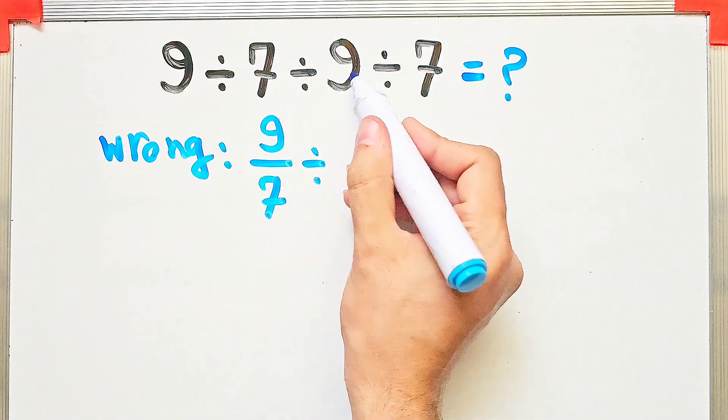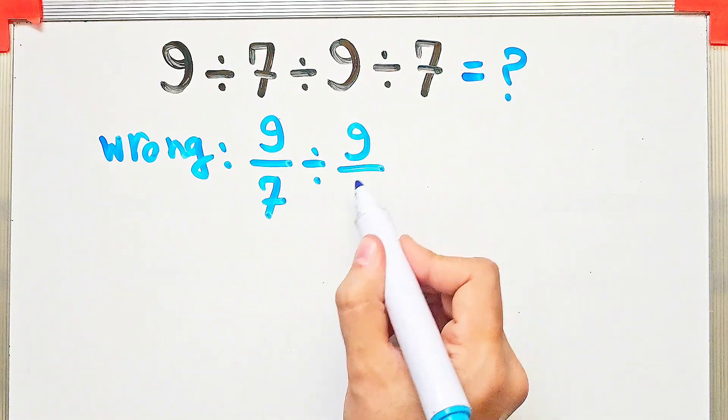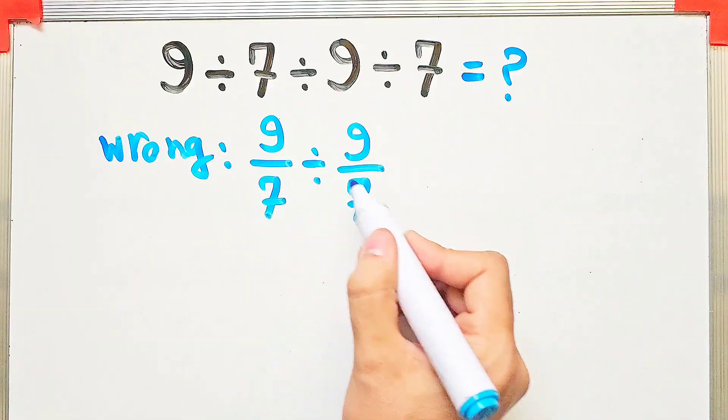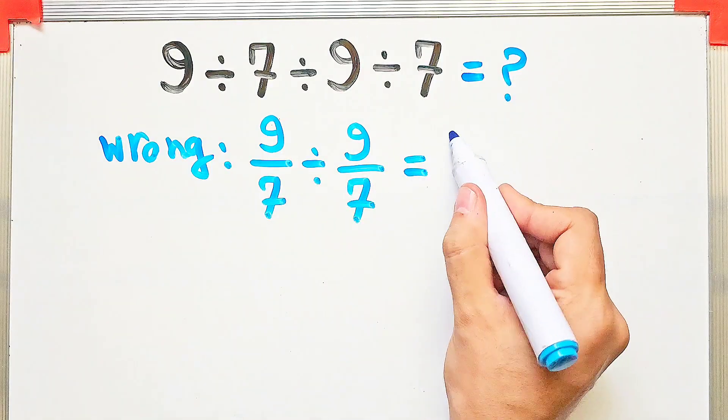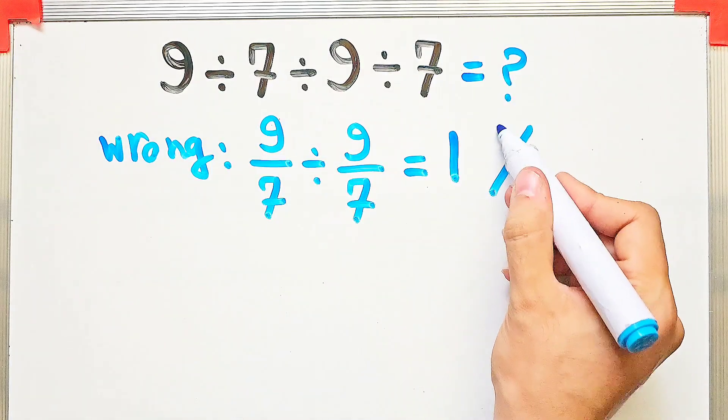After that, they do this division and they have 9 over 7. 9 over 7 divided by 9 over 7 equals 1, but this answer is definitely wrong.